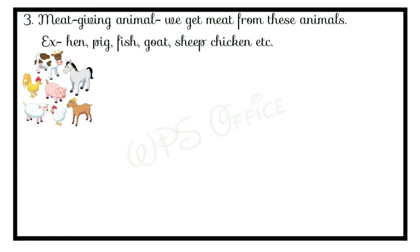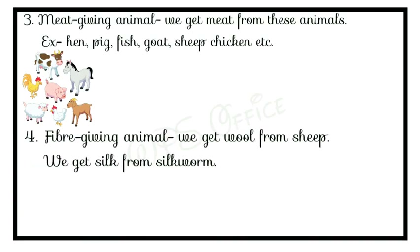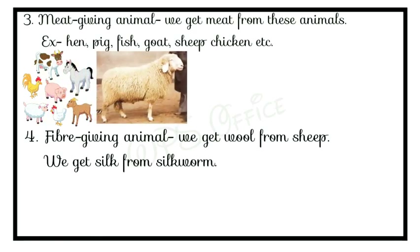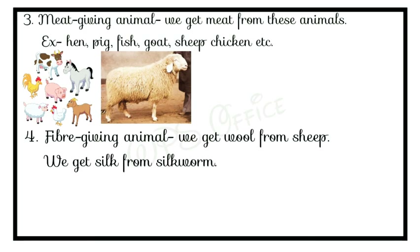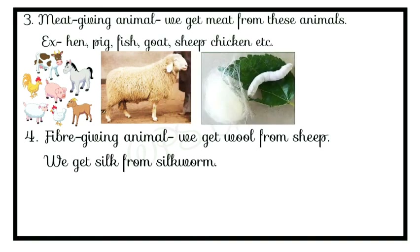The fourth category is fiber-giving animals — those from which we get fiber to make clothes. We get wool from sheep, and from that wool we make many types of woollen clothes. We also get silk from silkworms.